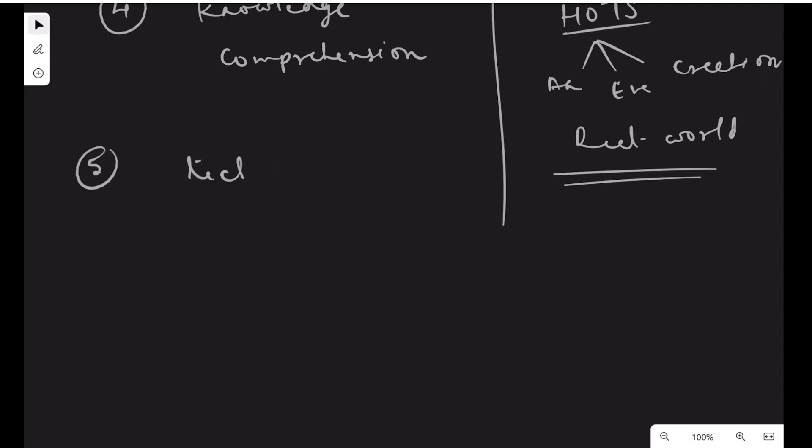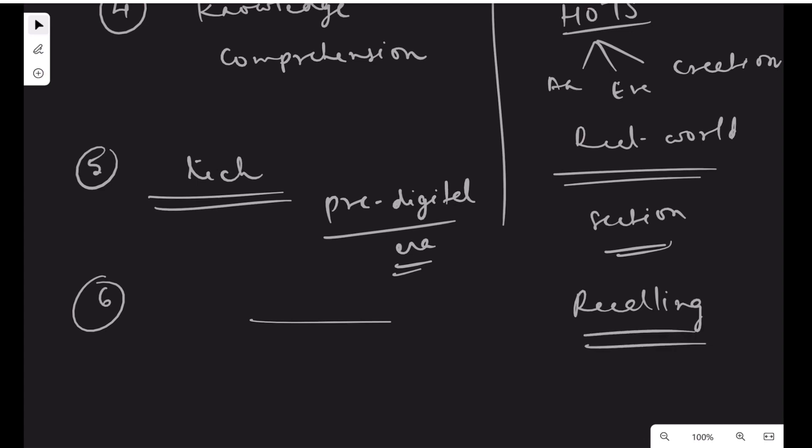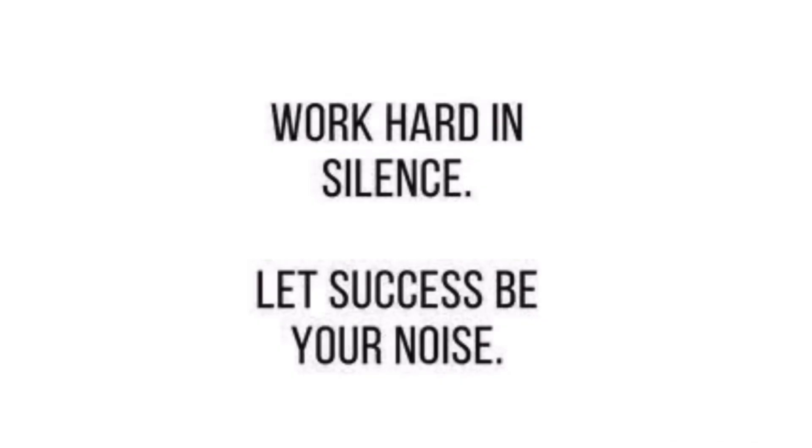The fifth difference is integration of technology. Since 1956 was pre-digital era, technology was not included in Bloom's taxonomy. But in revised Bloom's taxonomy, there is a whole section on integration of technology - how technology can be used to enhance learning at each level. The last difference is that recalling is very important because knowledge can only be useful if we can recall it. Based on that, we can move to higher order thinking skills. The lowest level, remembering, has been given a lot of importance. For those interested, simple notes are shared in the Blueprints Study telegram channel where you can download them.